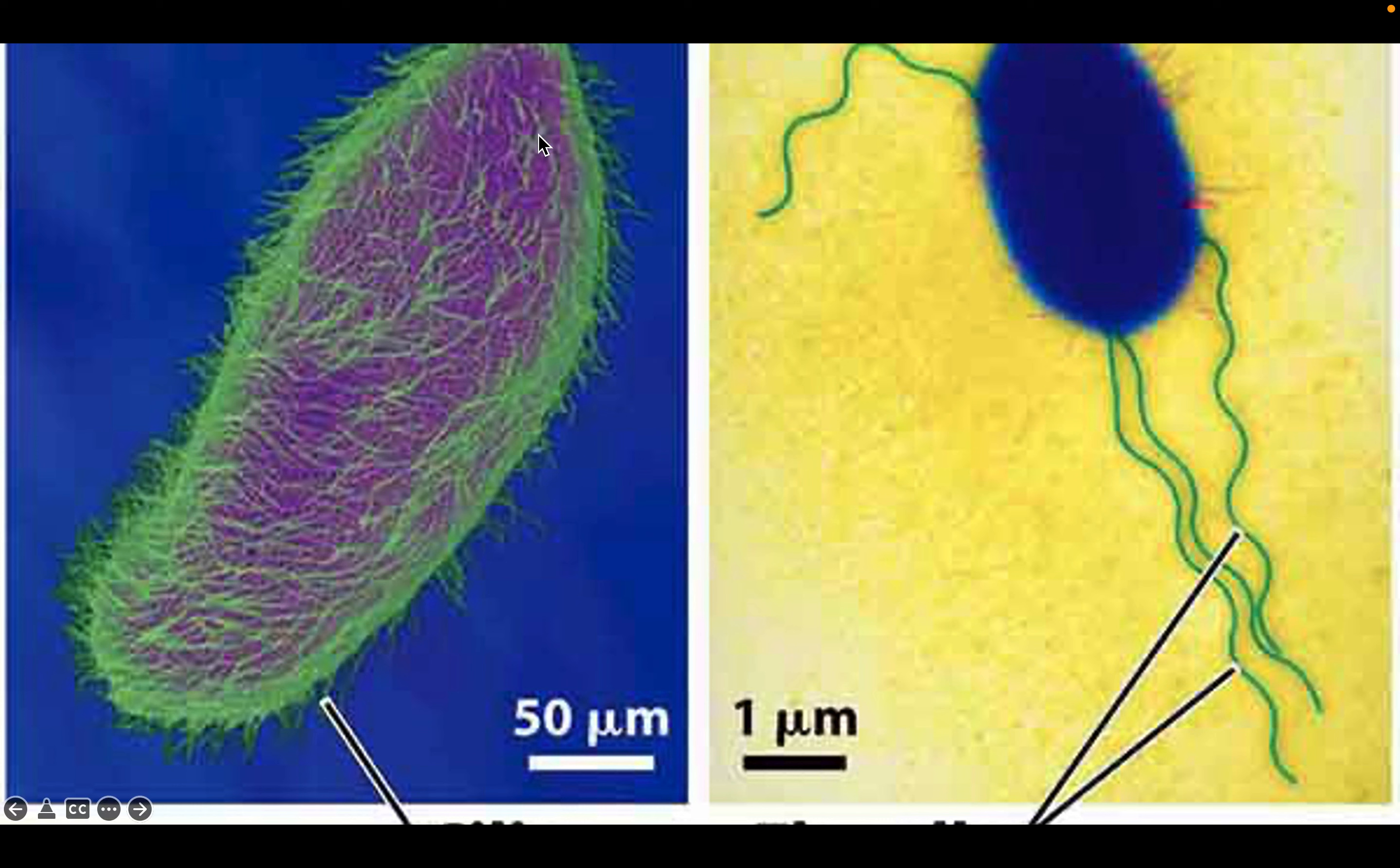And so we have possibly a bacterium here with cilia off of its surface, and here you can see a bacteria here with some flagella, but in our bodies and in human bodies, the sperm cell is the only one with a flagella.